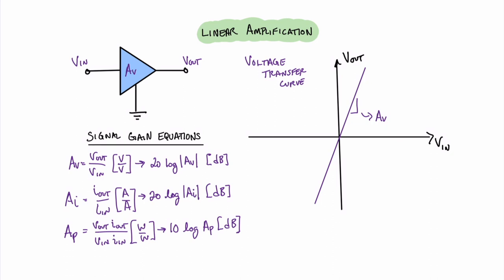I want to take a moment to discuss what happens if the transfer curve line has a negative slope rather than a positive one. In that case the slope is still our gain — it just means we have an inversion of the signal, or a 180-degree phase shift of the incoming signal. For most applications such as audio, there is no issue with this, since we can't hear the difference between a signal shifted 0 degrees and one shifted 180 degrees.